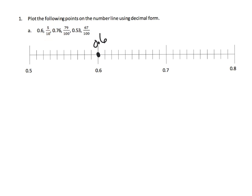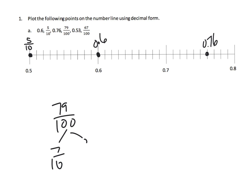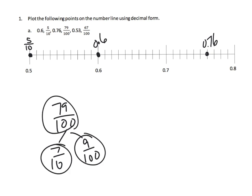Five tenths goes right here. Then 0.76 — that's seven tenths plus six hundredths, so we count one, two, three, four, five, six hundredths, and that's 0.76 right there. Then seventy-nine hundredths — we know from a previous lesson that's seven tenths plus nine hundredths, so we go to seven tenths and then nine hundredths more, placing seventy-nine hundredths right there.